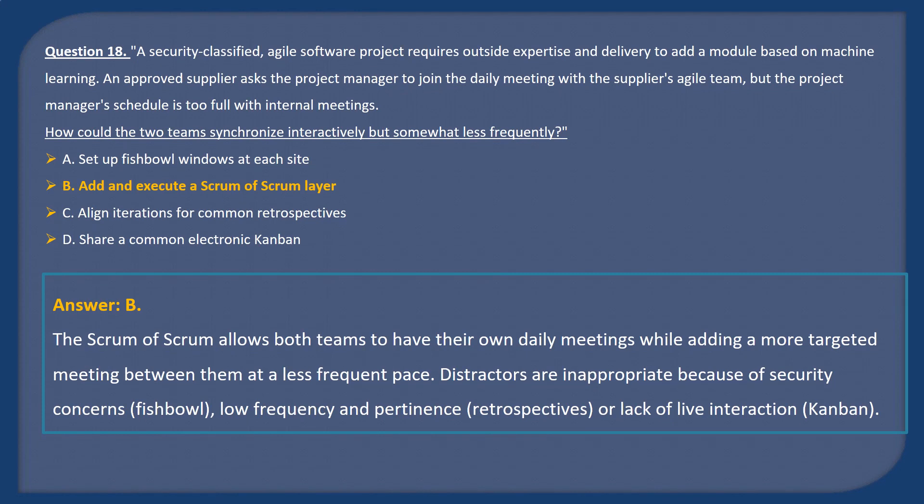Answer B. The scrum of scrums allows both teams to have their own daily meetings while adding a more targeted meeting between them at a less frequent pace. Distractors are inappropriate because of security concerns — fishbowl windows, low-frequency retrospectives, or lack of live interaction via Kanban.